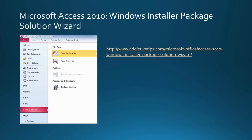Because Access 2013 databases are backwards compatible with Access 2010, you can take your database, put it on a system that currently has Access 2010, and use the package solution wizard to create your MSI package. I have a link on the page that goes to www.addictivetips.com and I'll make sure it's available in the description. It's a nice step-by-step walkthrough about how to use Access 2010 to create your installation package.